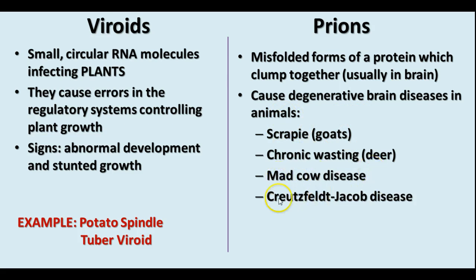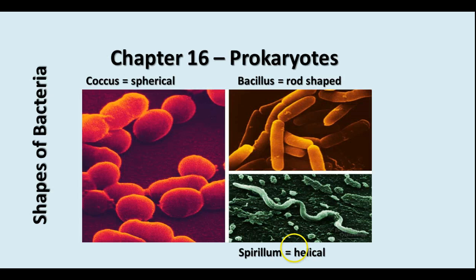Prions are misfolded proteins which clump together, oftentimes in the brain, causing degenerative brain diseases. Mad cow disease is the most familiar example. The human equivalent is Creutzfeldt-Jakob disease. Another name for mad cow disease is bovine spongiform encephalitis — 'encephalitis' refers to the brain, 'bovine' refers to cattle, and 'spongiform' means it makes the brain spongy because areas degenerate. We'll stop there on viruses and continue in the next lesson on bacteria.